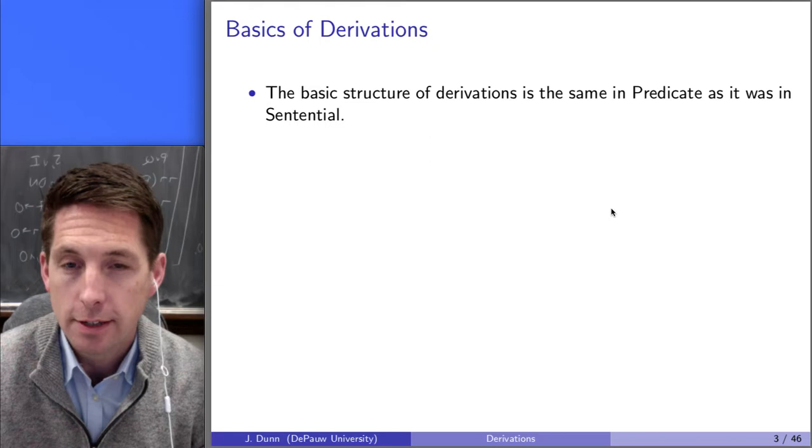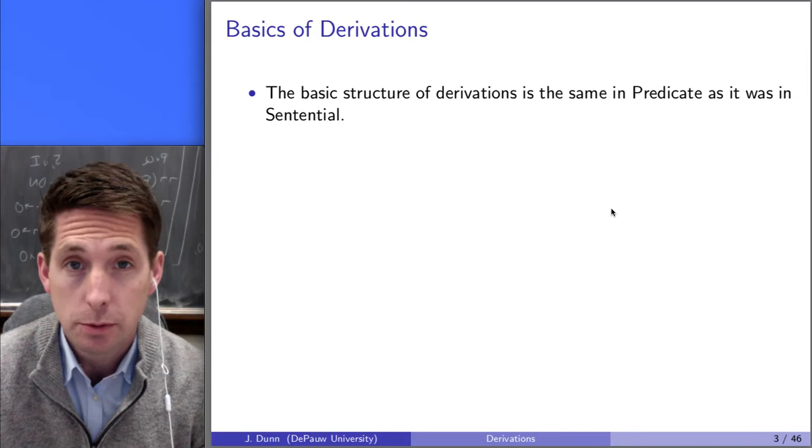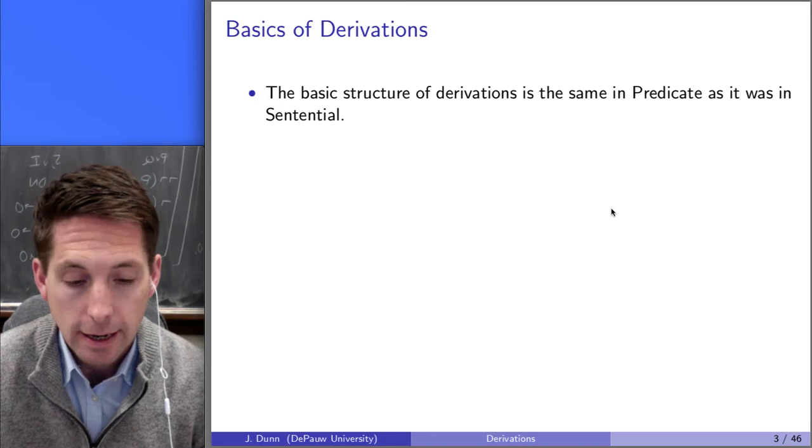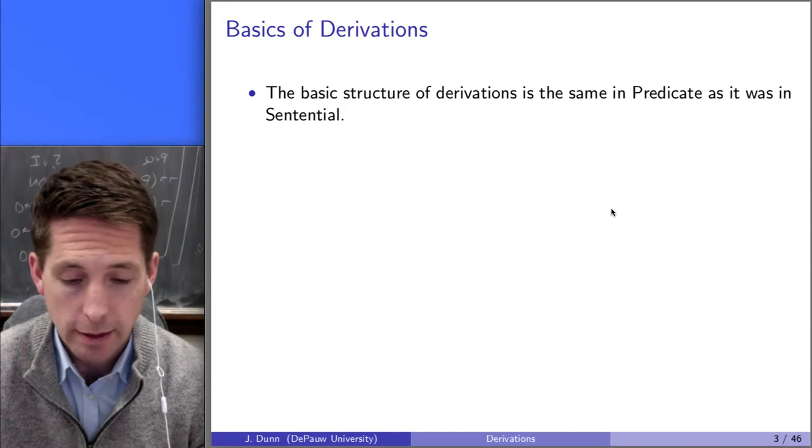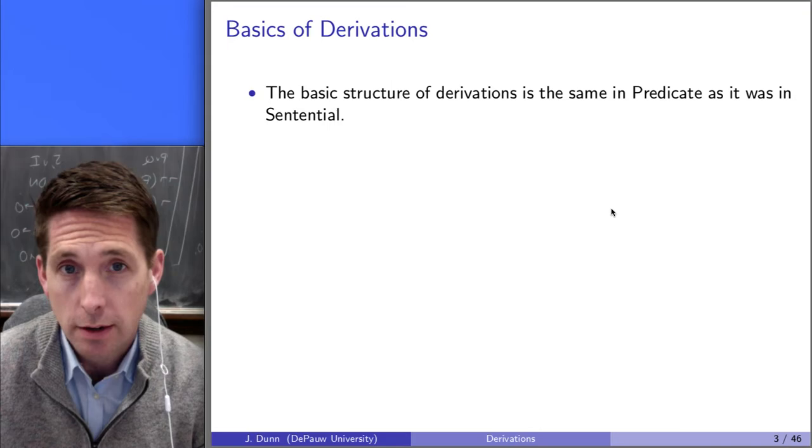Just like our sentential derivations helped us show that sentential arguments were valid, the same thing is true for these predicate derivations. The only difference, or the big difference, is that instead of using sentential formulas, we're going to have predicate formulas. So we're going to have x's and y's and quantifiers.